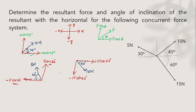Step 1: check the sign convention. Step 2: the side adjacent to theta is the cos side and the other is the sine side. The formulas are F cos theta and F sin theta, where F is the force inclined at angle theta.